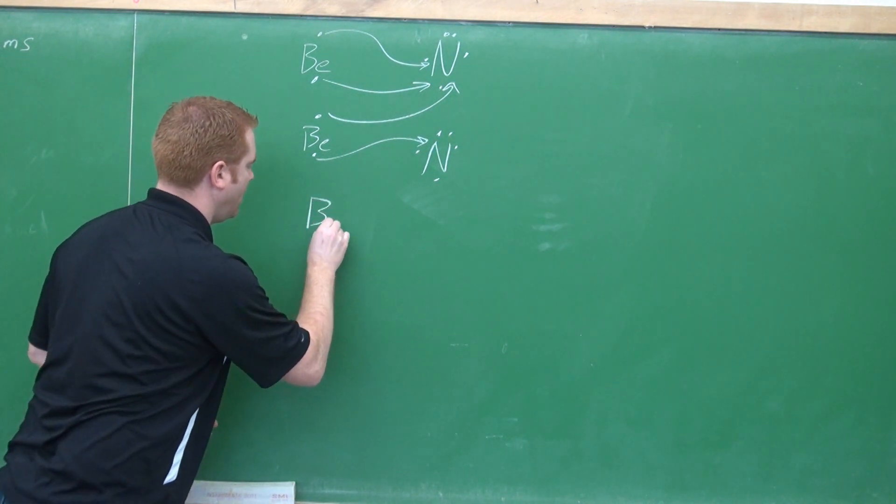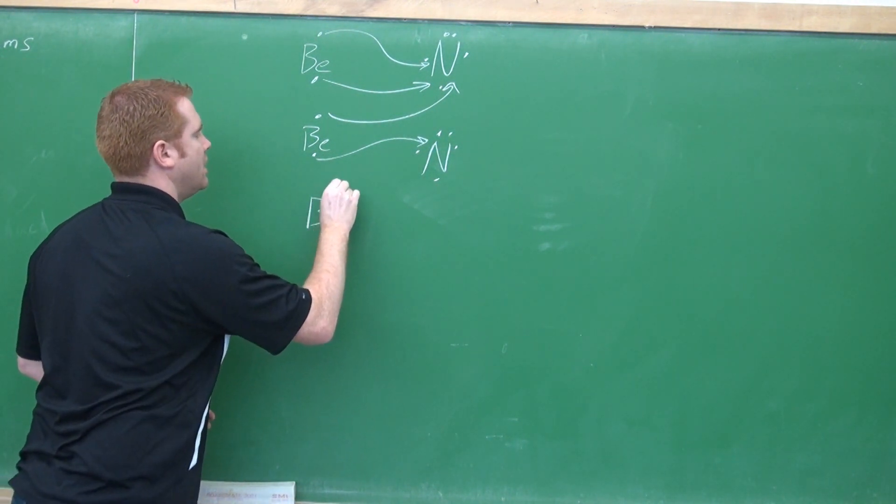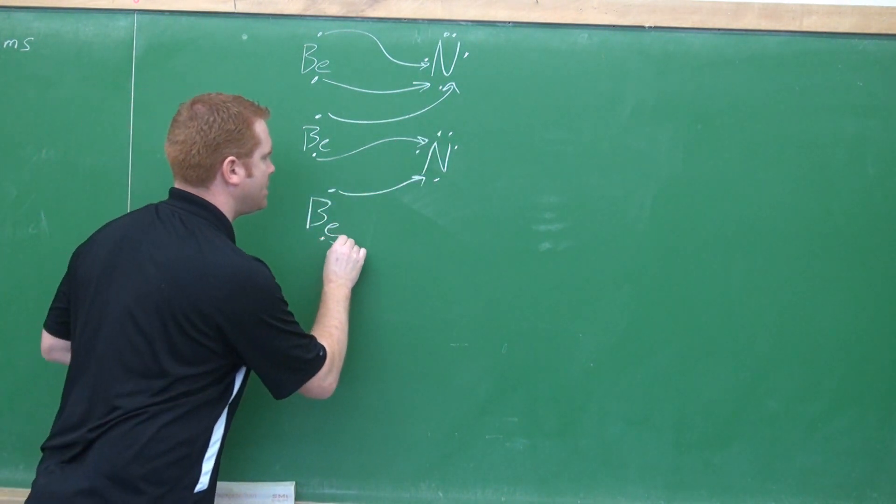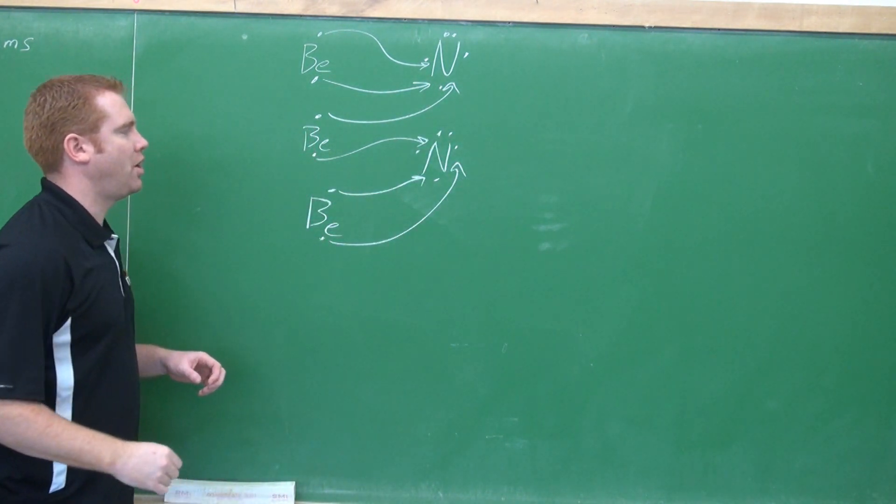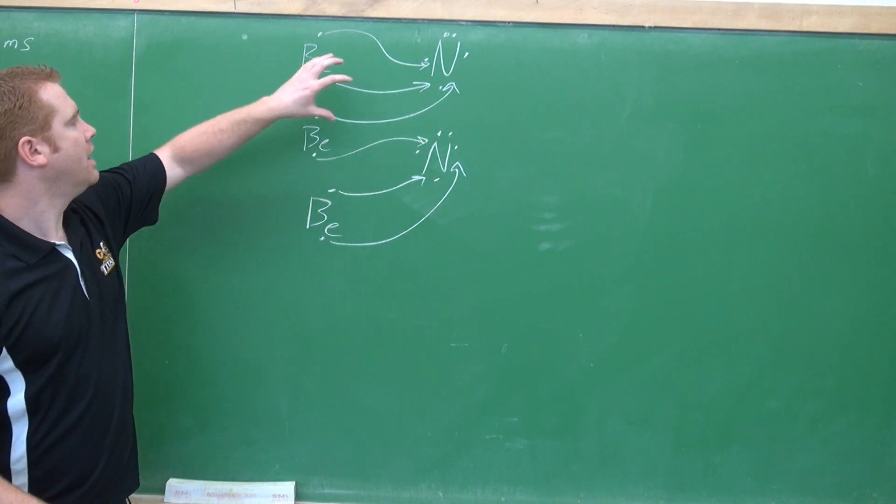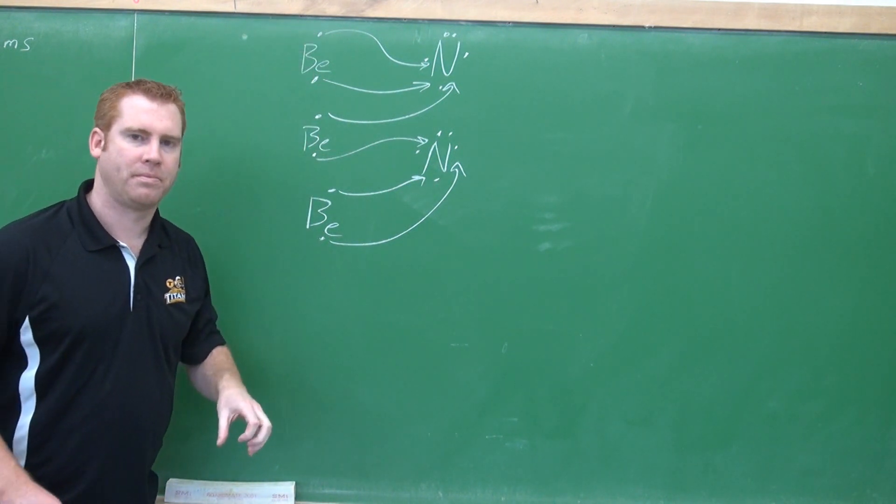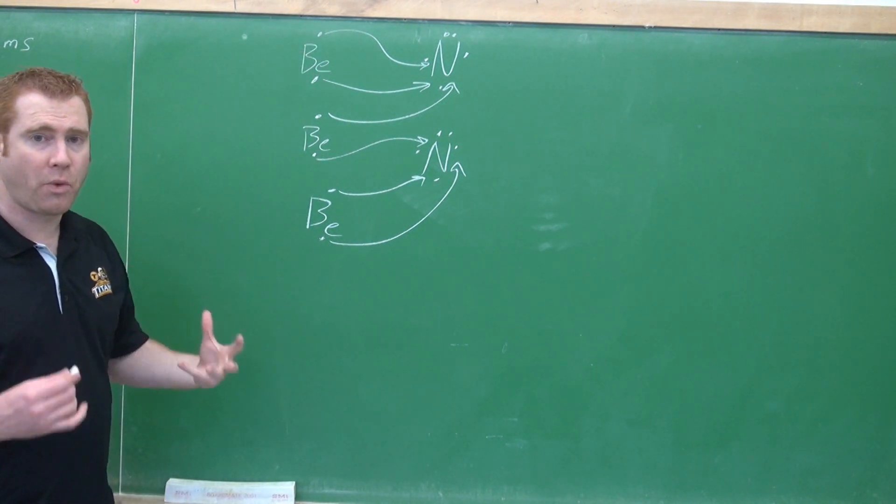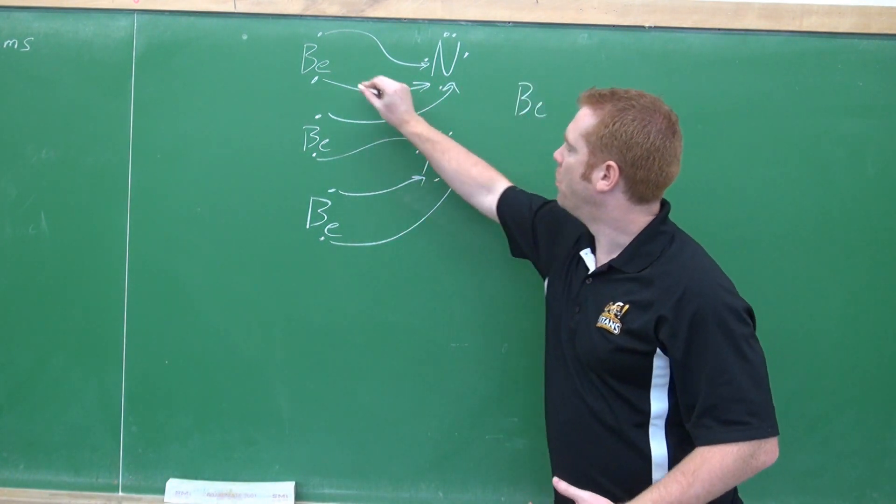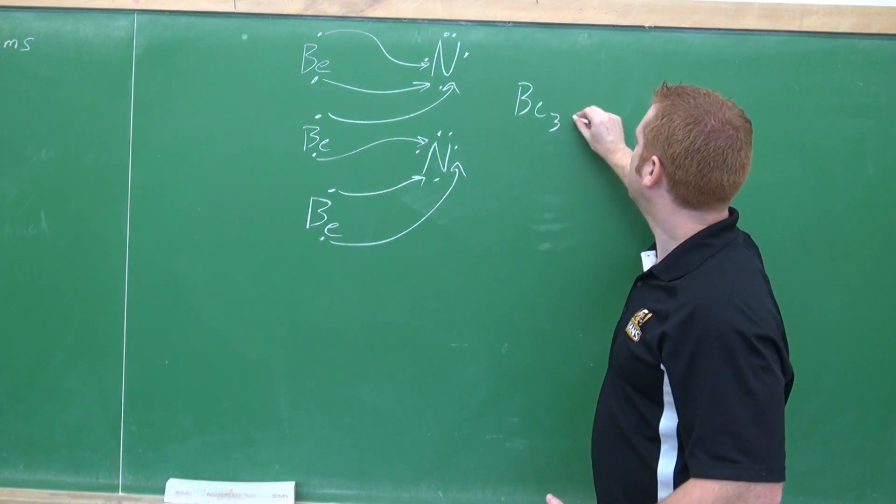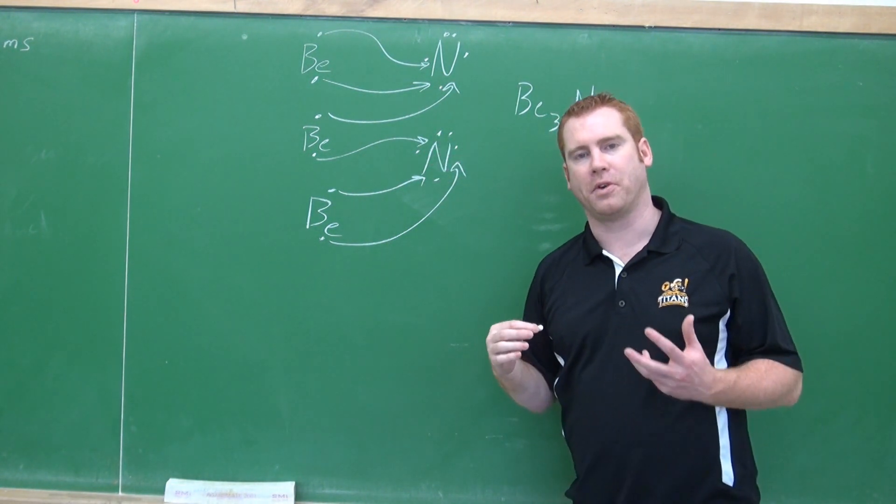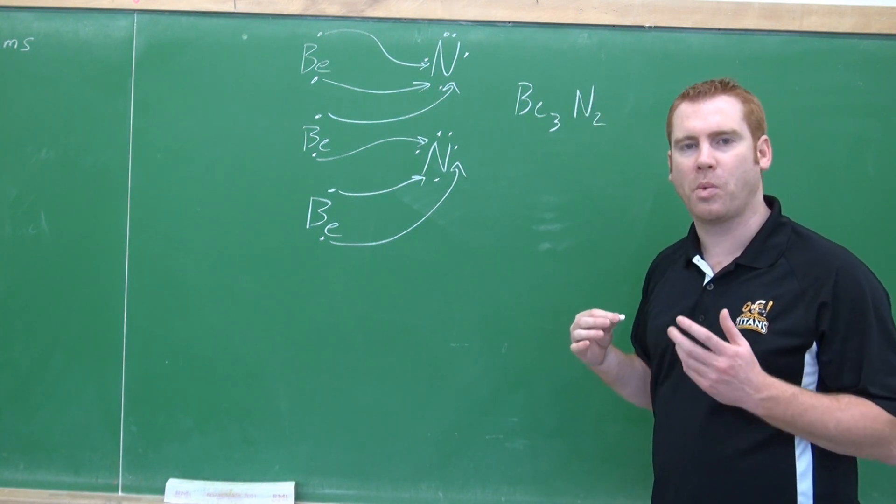It sends one over. Now the nitrogen is not happy still, but this beryllium is, so we call up another beryllium. One, two, sends one over. It's happy now once it gets the second electron. So this one's gotten rid of its two, this has got three. This one's gained three, gotten rid of two. So everybody's happy. So what's our formula going to be? I have one, two, three berylliums, two nitrogens. Now that's not bad. It's a lot better than going through and drawing the whole Bohr-Rutherford diagrams. But is there an easier way? And the answer is yes.